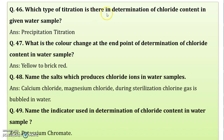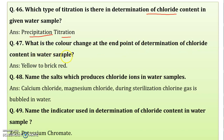Which type of titration is used in the determination of chloride content in a given water sample? When you determine chloride in the water sample, it is a precipitation titration. What is the color change at the end point? The color change is yellow to brick red.